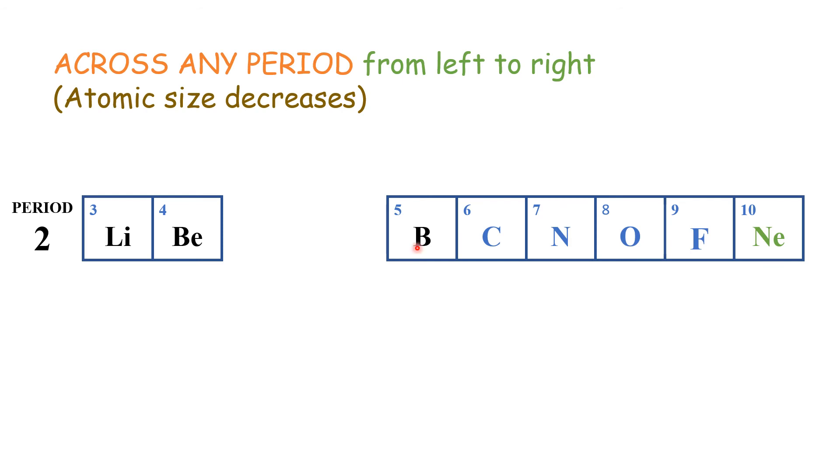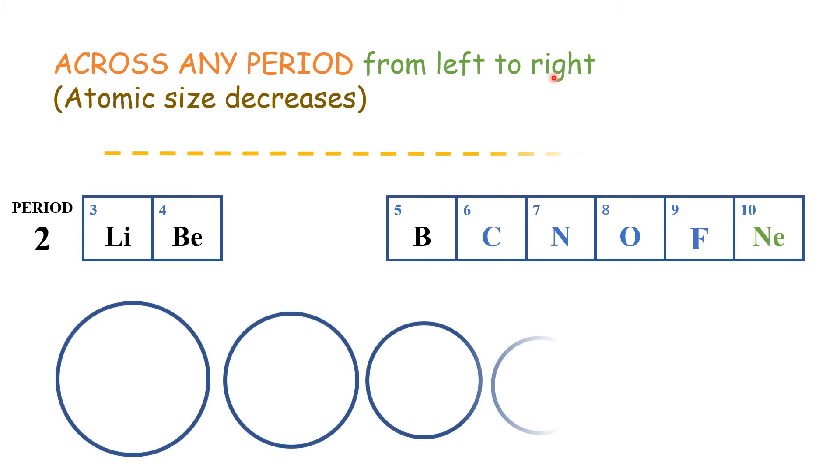What about across any period, specifically from left to right? In this case, the atomic size decreases. When you look at the atoms of lithium, beryllium, and boron, that will mean that an atom of boron will be smaller in size compared to that of beryllium. And that of neon will always be having the smallest atomic size in period 2.